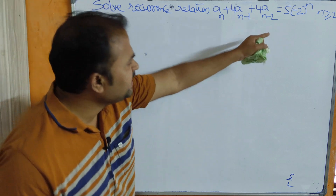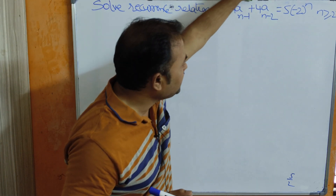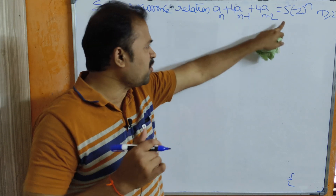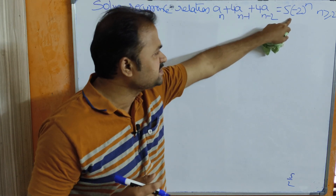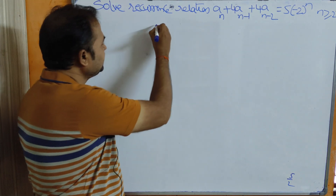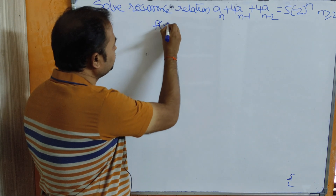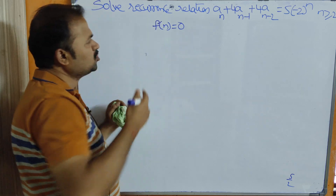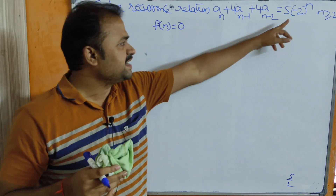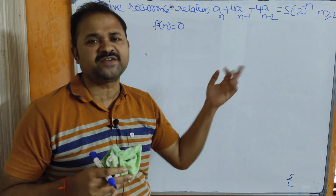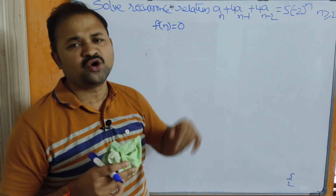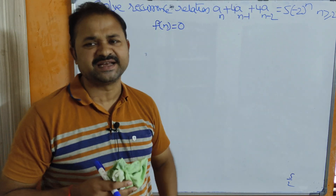Here the right-hand side value is not equal to 0, so f(n) is not equal to 0. If f(n) equals 0 then we call it a homogeneous recurrence relation, whereas if f(n) is not equal to 0 then we call it a non-homogeneous recurrence relation.